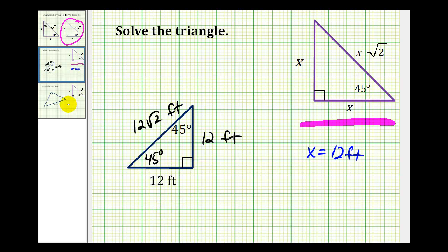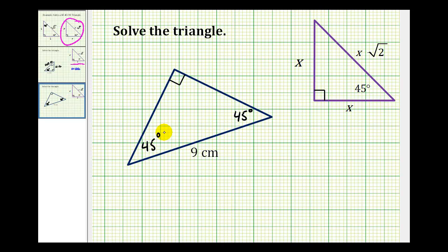Let's take a look at one more example. Again, we notice we have a 45-45 right triangle, but now we're given the length of the hypotenuse. And the length of the hypotenuse would be equal to x times square root two. So let's go ahead and set this up as an equation. X square root two must equal nine centimeters.